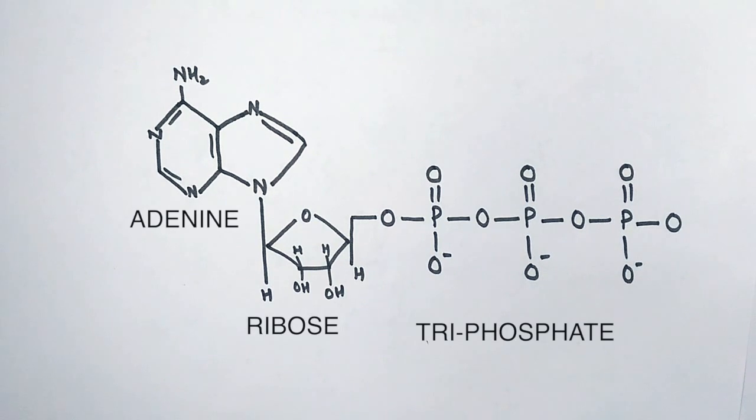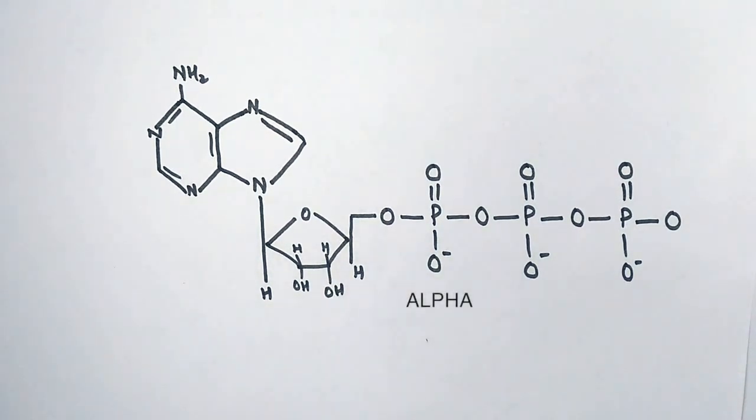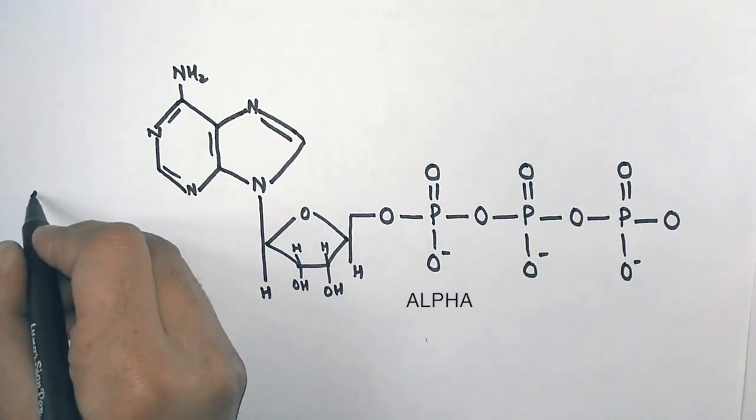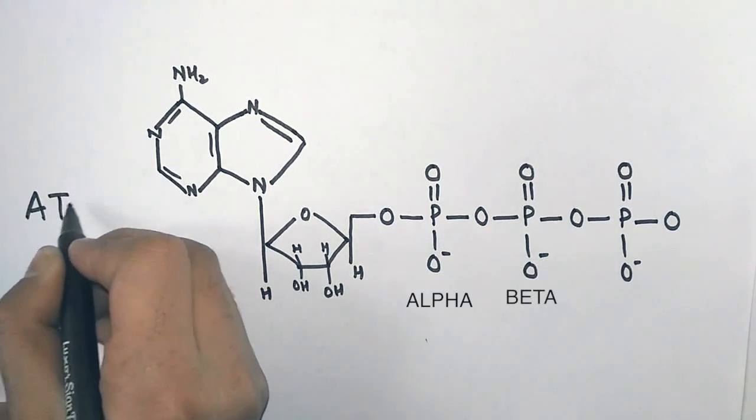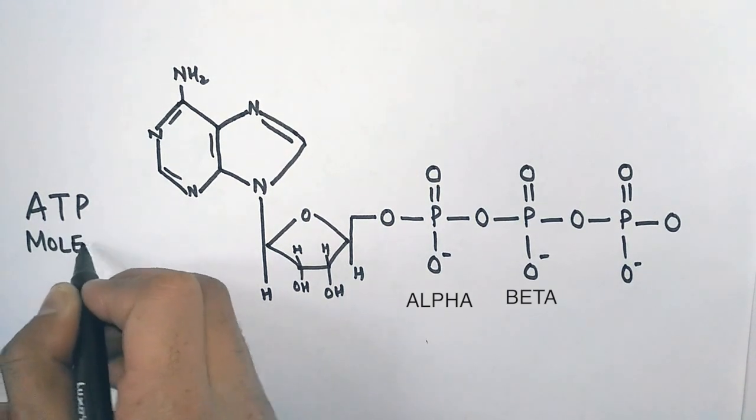The three phosphates are denoted by alpha phosphate, which is directly attached to the ribose sugar, then beta phosphate, which is attached to the alpha phosphate, and finally the terminal phosphate is termed gamma phosphate, on which we will be concentrating more in this lecture.